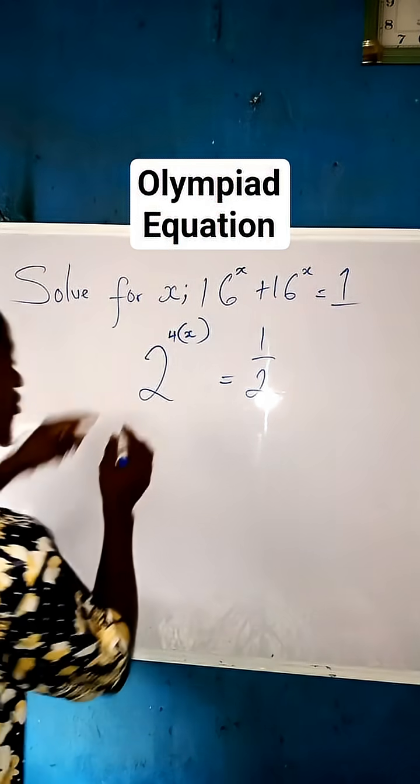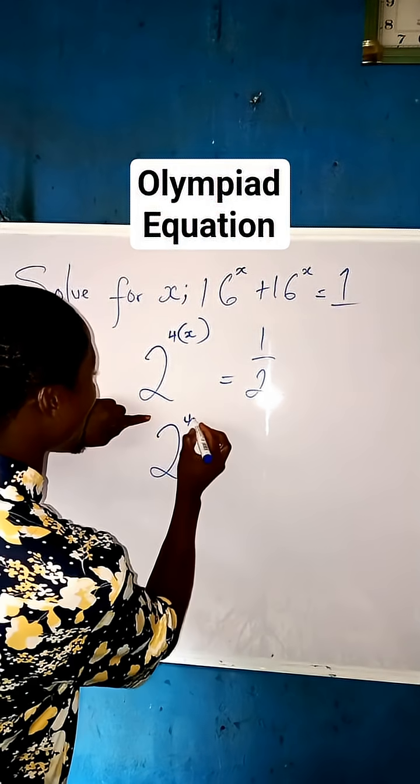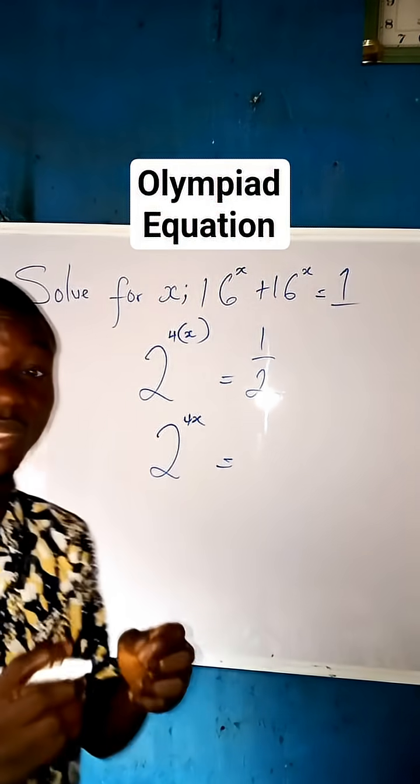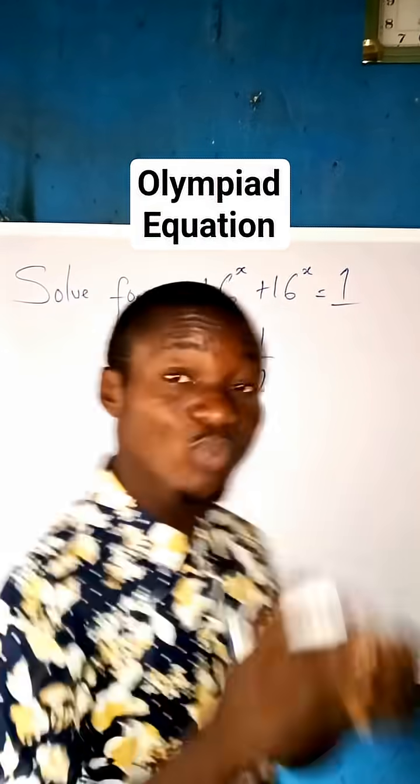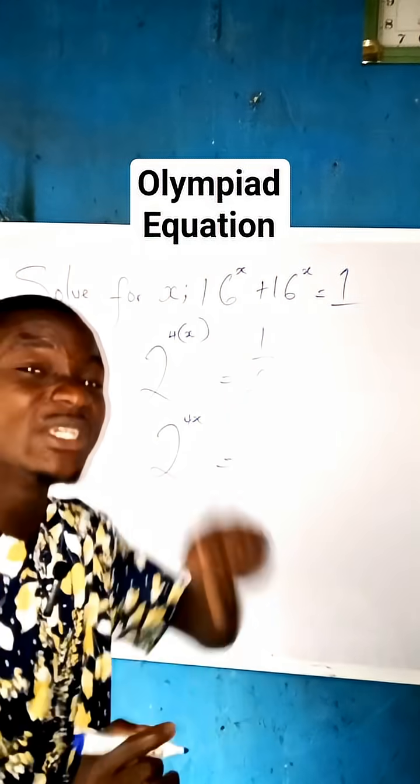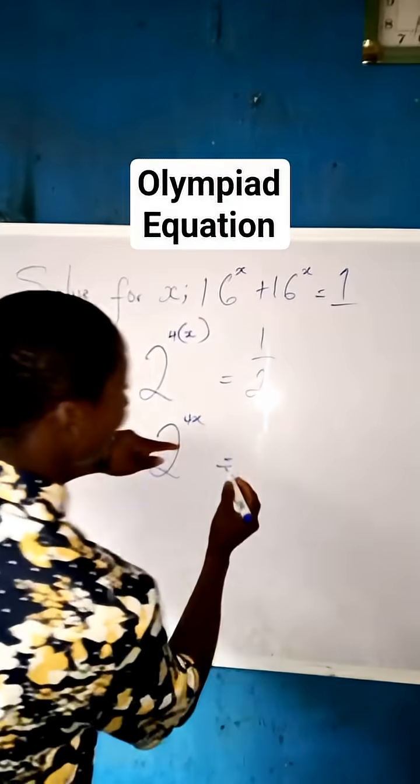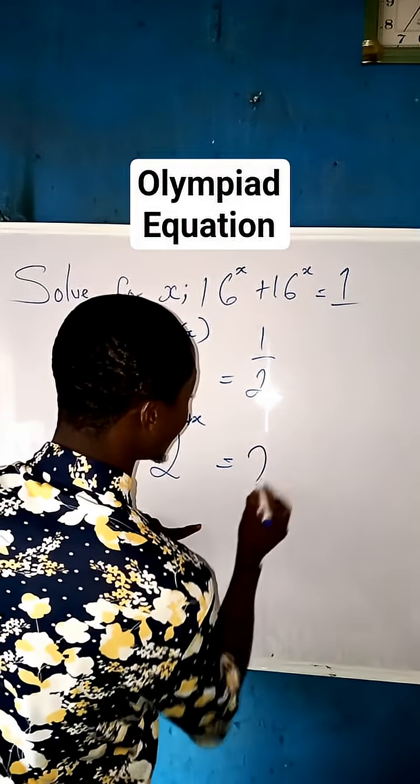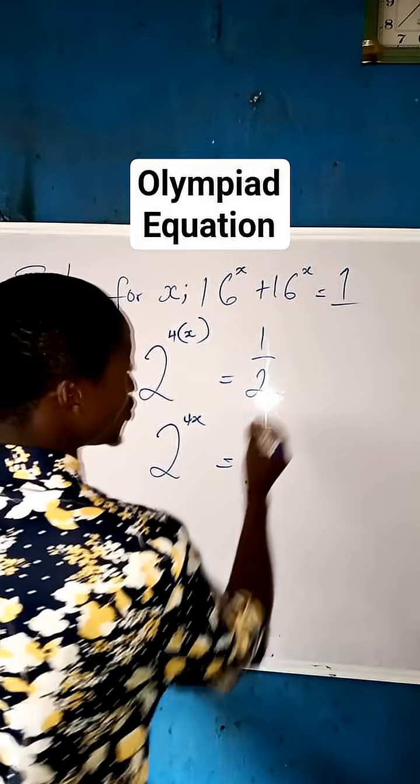Now what we do next is very simple, so simple. So we can write this 2 to the 4x equal to... we told you whenever you have 1 over, that 1 over becomes what? Minus to the power of that base, which means that this 1 over, now this is 2.